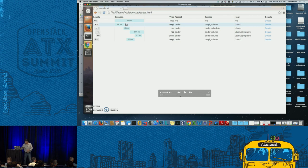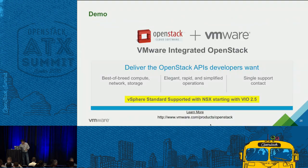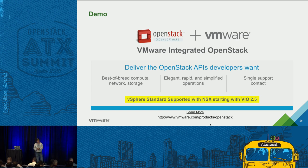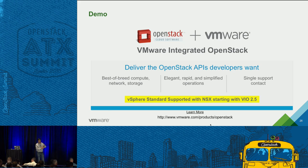That's pretty much all I had. We'll open it up for questions. The key message is: if you want to build an OpenStack Cloud on top of vSphere and NSX, VIO is available free of cost and will support vSphere Standard, which comes at around $995 per CPU. Starting with VIO 2.5 you can use that with NSX, and VIO itself is free — so give it a shot.